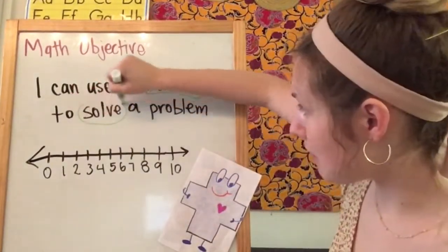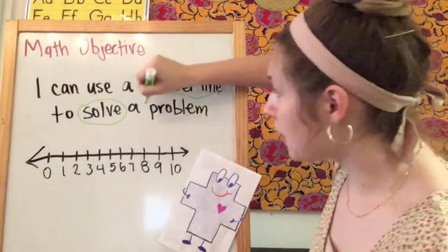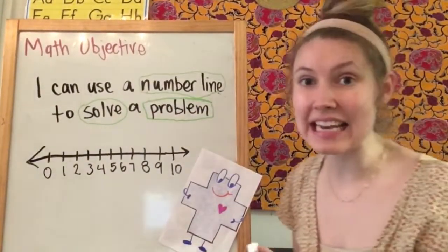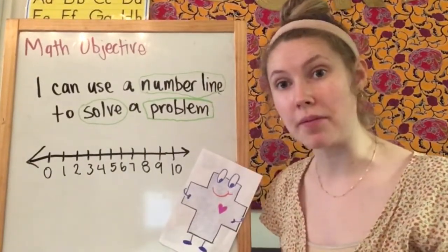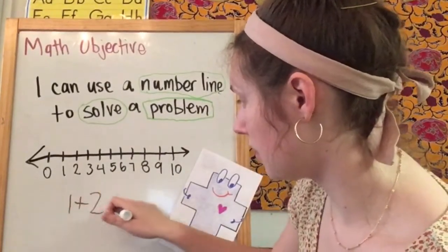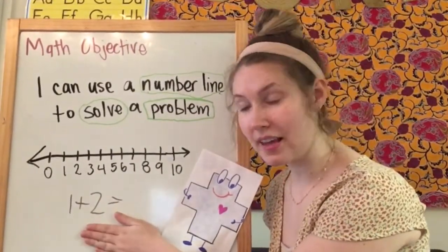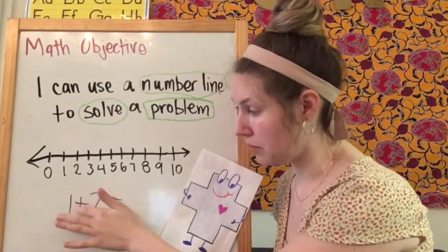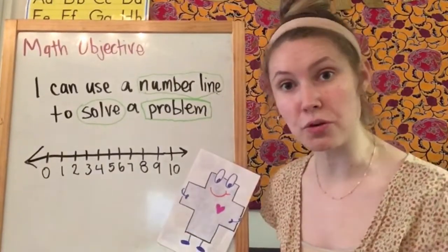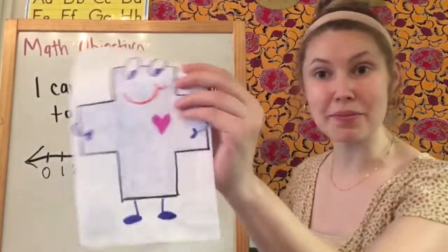When I say solve, that means we're going to be finding the answer. And when I say problem, that could mean a story problem like we were talking about last week, or it could mean an addition problem. An addition problem is when you might see a number sentence on a paper and we need to find the answer. So if I gave you something like one plus two, you need to find the answer. Sometimes we make them up with stories, and sometimes you're going to see it written just like that. But both times we need to use Gus the Plus to help us out.